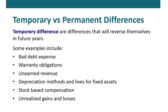The differences between GAAP and tax-based income are based on both temporary and permanent differences. Temporary differences are differences that will reverse themselves in future years or future periods. Some examples include bad debt expense. Under the matching principle, we have to record an allowance for doubtful accounts and accrue bad debt expense. The same thing is true for warranty obligations and unearned revenue.